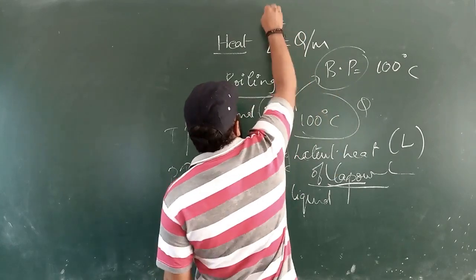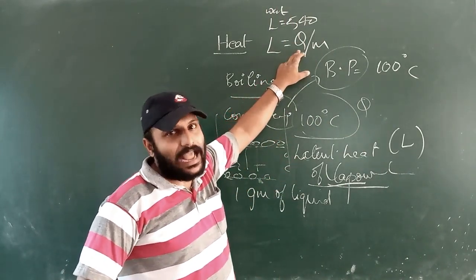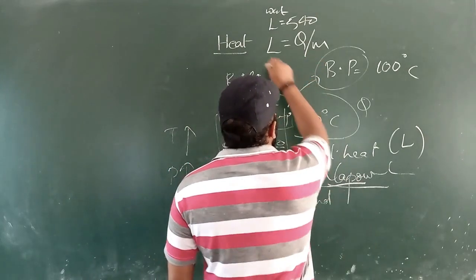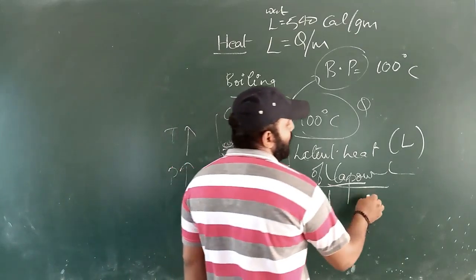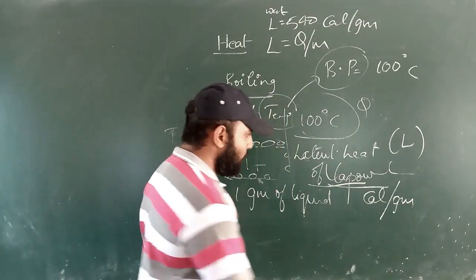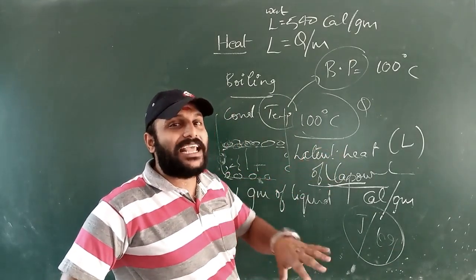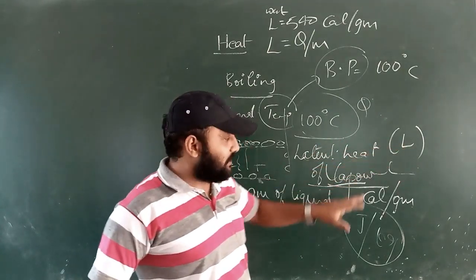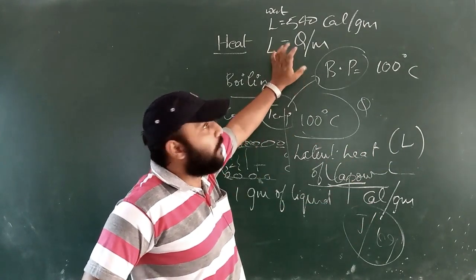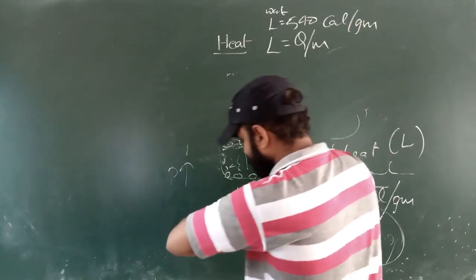The boiling point of water is 100°C, and the latent heat of vaporization of water is 540 calories per gram. So to summarize: latent heat of vaporization is the amount of heat energy required to change phase from liquid to gaseous state. Its CGS unit is calorie per gram and SI unit is joule per kilogram.